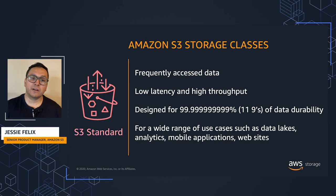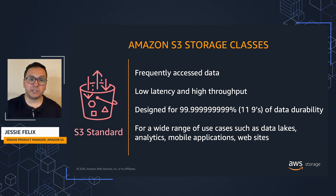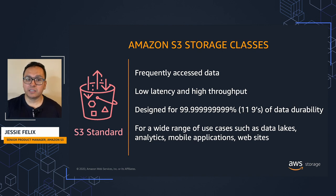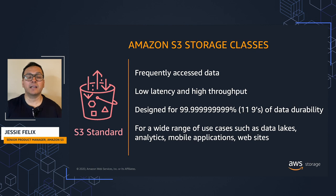S3 Standard offers high-performance object storage for frequently accessed data. S3 Standard is designed for 11 nines of durability, as objects are stored redundantly across multiple availability zones. Because it delivers low latency and high throughput, S3 Standard is ideal for a wide variety of use cases, including data lakes, cloud-native applications, dynamic websites, content distribution, mobile and gaming applications, and big data analytics.